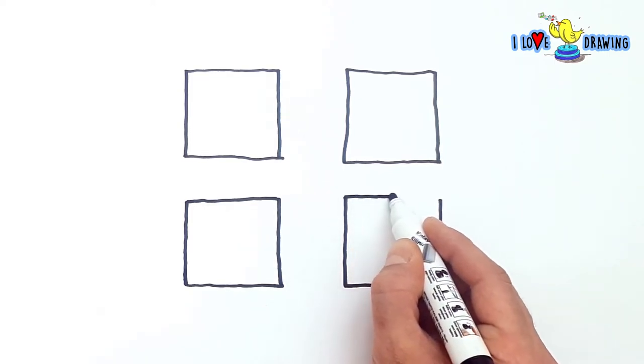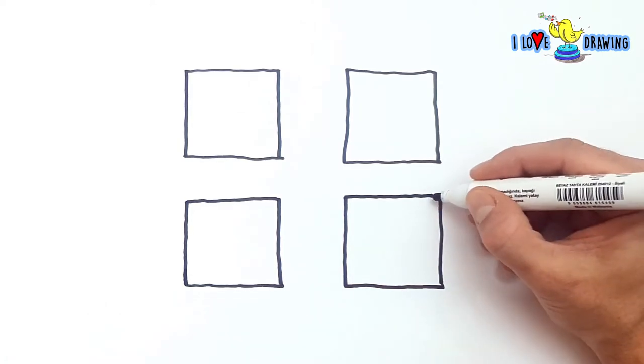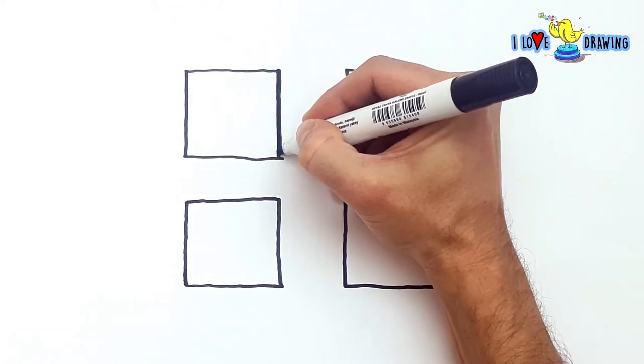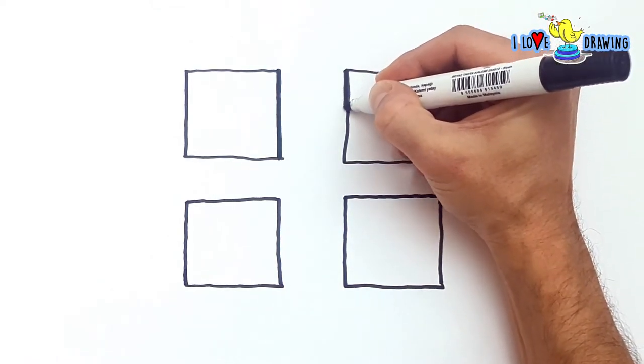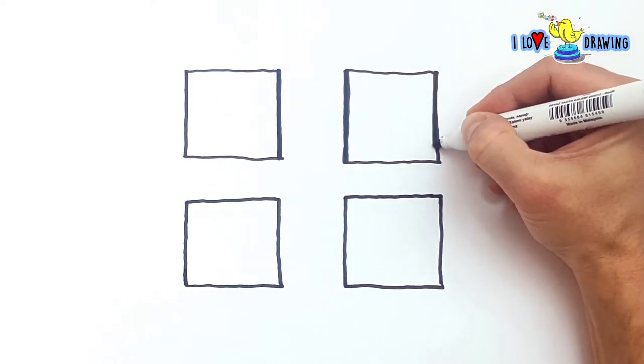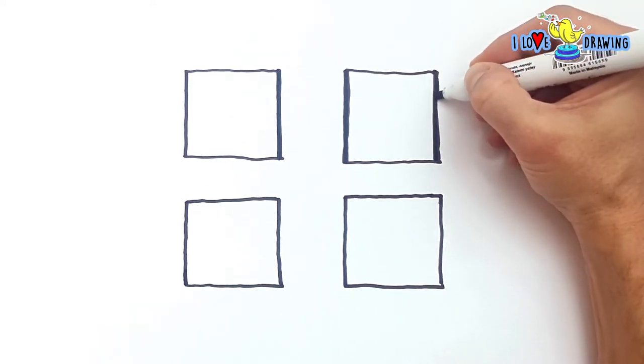I'm using my thick black marker to draw these squares. Go ahead and do the same friends. I mean you don't have to be drawing squares, it can be circles, it can be triangles, or whatever. The shape of the head doesn't matter, what matters are the expressions.